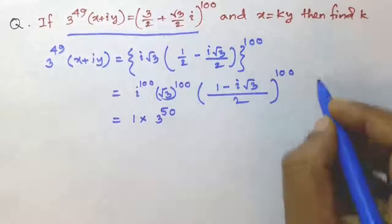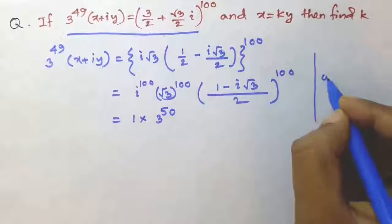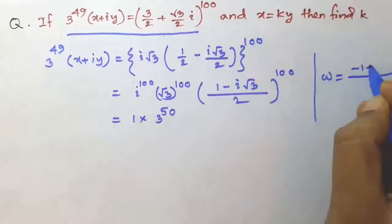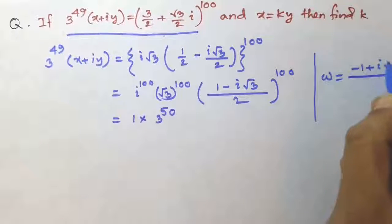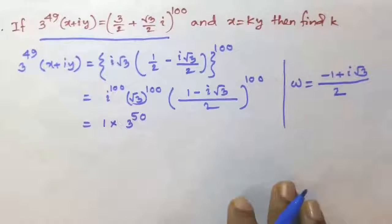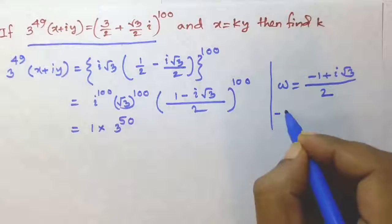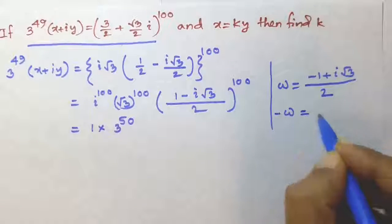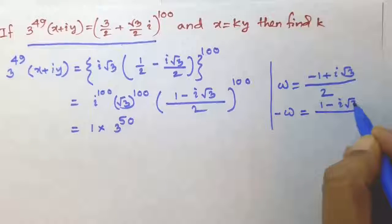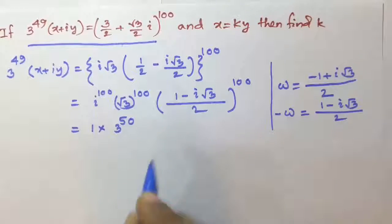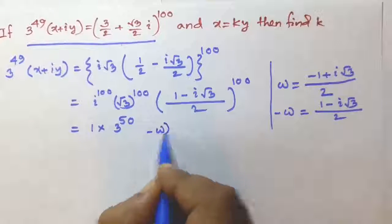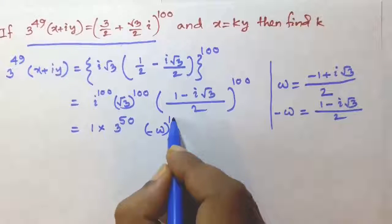Now, you know that omega is equal to minus 1 plus i root 3, whole divided by 2. So, minus omega is equal to 1 minus i root 3 divided by 2. So, this is equal to minus omega, whole to the power 100.